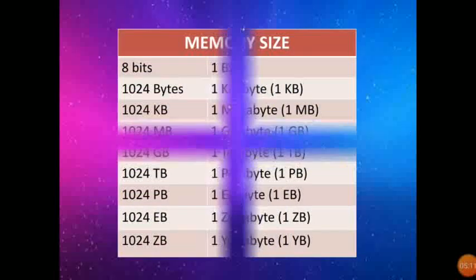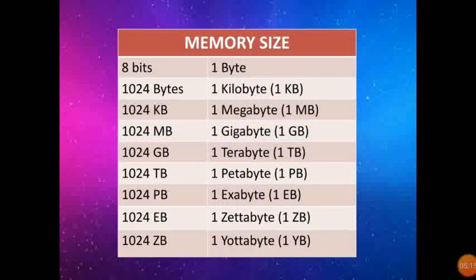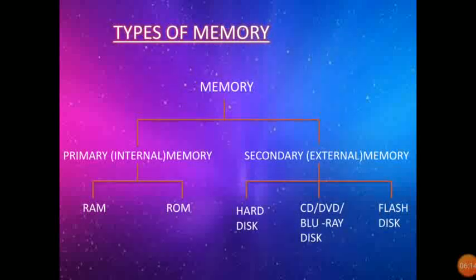The next topic is Memory Size. This memory size chart is given in your book. 8 bits equals 1 byte; 1024 bytes equals 1 kilobyte (KB); 1024 KB equals 1 megabyte (MB); 1024 MB equals 1 gigabyte (GB); 1024 GB equals 1 terabyte (TB); 1024 TB equals 1 petabyte (PB); 1024 PB equals 1 exabyte (EB); 1024 EB equals 1 zettabyte (ZB); 1024 ZB equals 1 yottabyte (YB). You have to learn all these memory sizes.